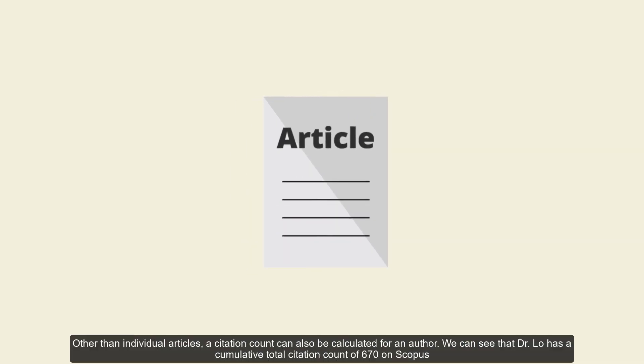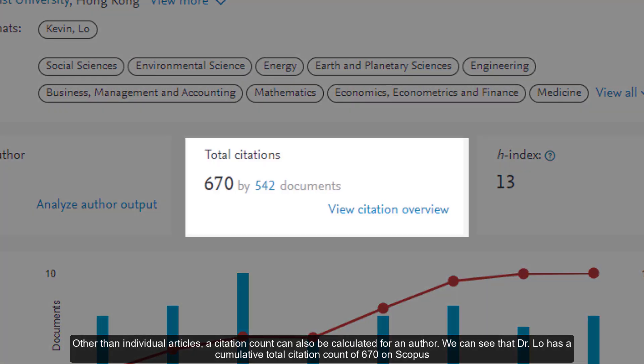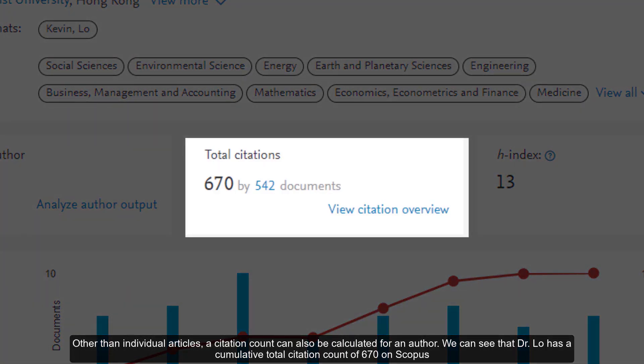Other than individual articles, a citation count can also be calculated for an author. We can see that Dr. Lo has a cumulative total citation count of 670 on Scopus.